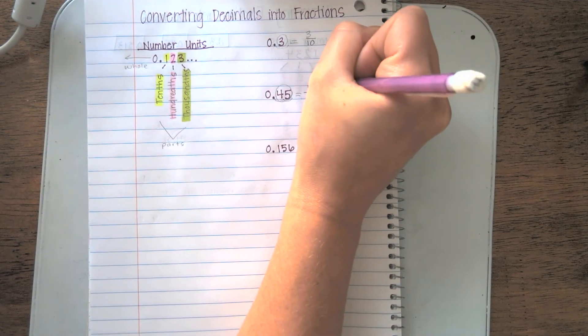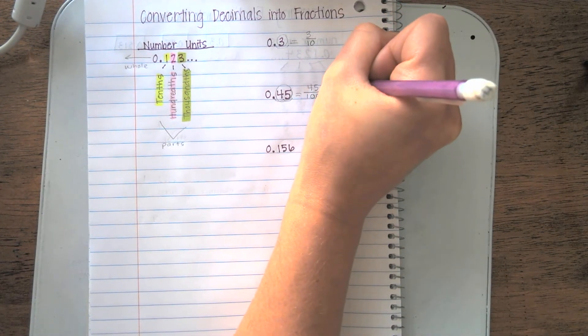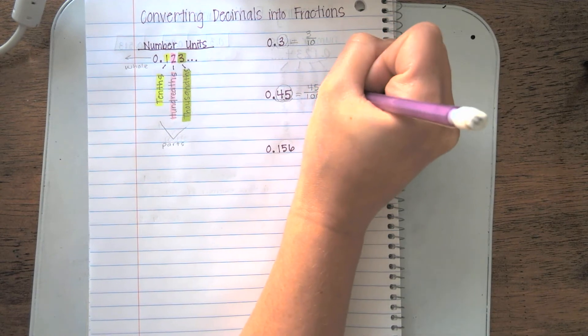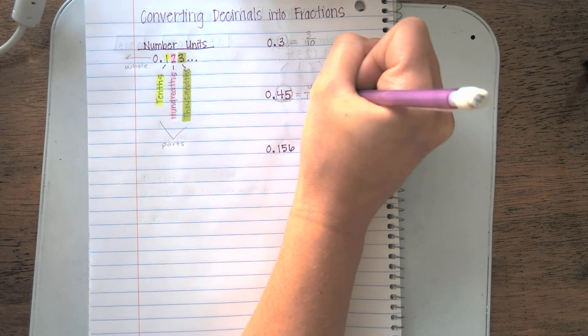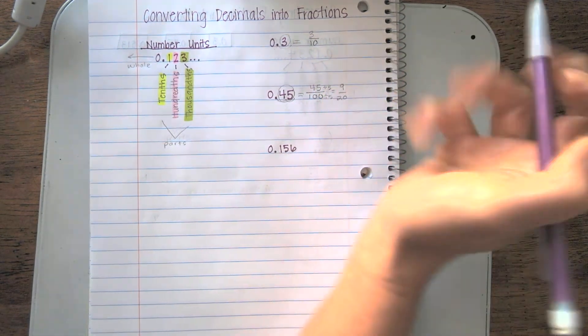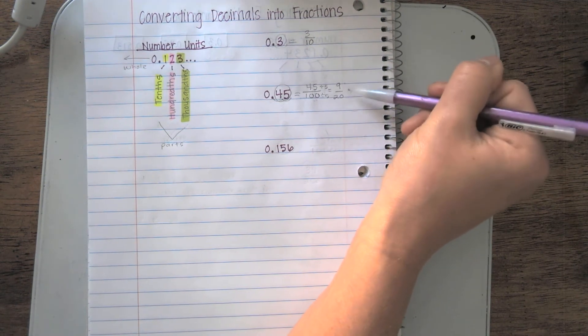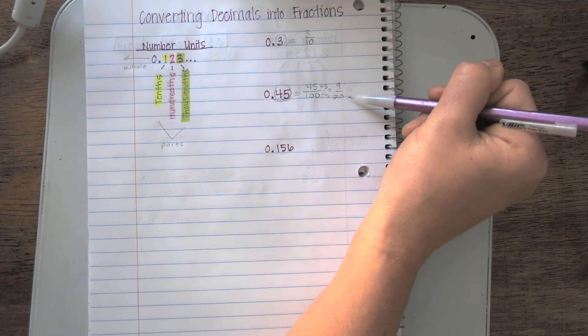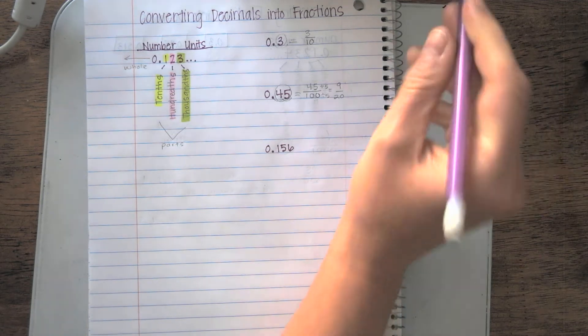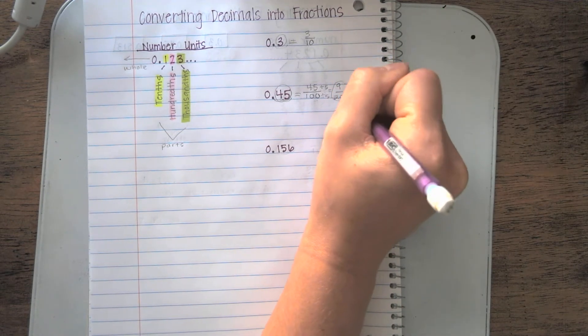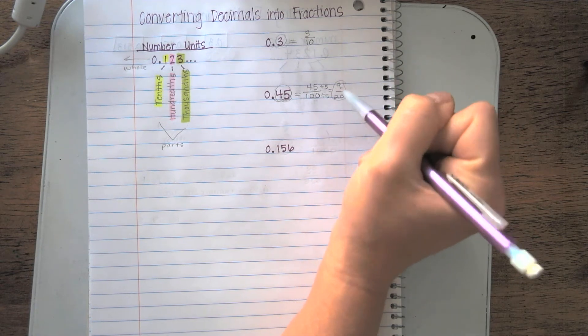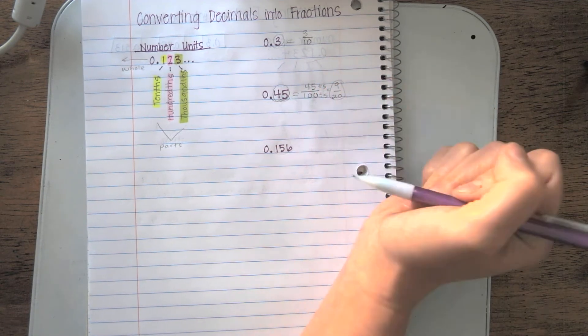So 45 divided by 5 is 9. And 100 divided by 5 is 20. We cannot break this fraction down. 9 and 20 do not have any common denominators other than 1. So 9/20 is the simplified form of 45/100.